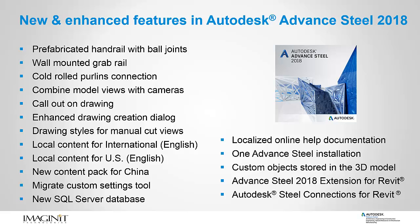New and enhanced features in Autodesk Advanced Steel 2018 include: prefabricated handrail with ball joints, wall mounted grab rail, cold rolled purlins connection, combined model views with cameras, callout on drawing, enhanced drawing creation dialogue, drawing styles for manual cut views, local content for international English, local content for US English, new content pack for China, migrate custom settings tool, new SQL server database, localized online help documentation, one Advanced Steel installation, custom objects stored in the 3D model, Advanced Steel 2018 extension for Revit, and Autodesk Steel Connections for Revit.